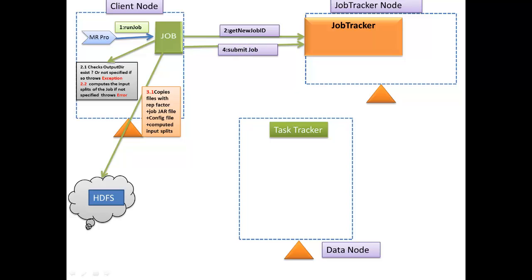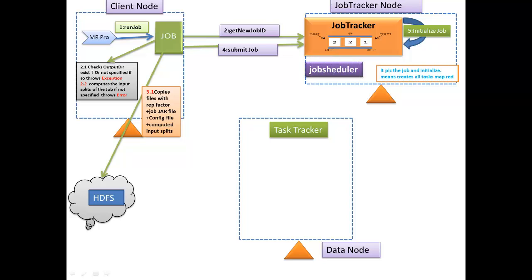Whenever the client submits the job, it is pushed into the job tracker's internal queue. The job tracker maintains this queue and when jobs come in, they are pushed into it. The job tracker has a scheduler — either a fair scheduler or a capacity scheduler — which can be configured in the Hadoop cluster. Based on the scheduling algorithm, the scheduler picks the job and initializes it.